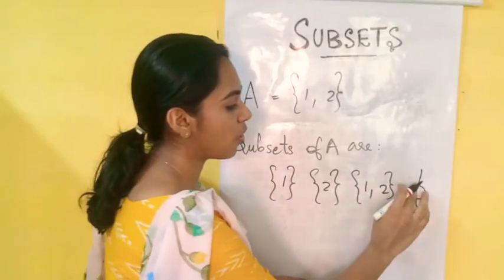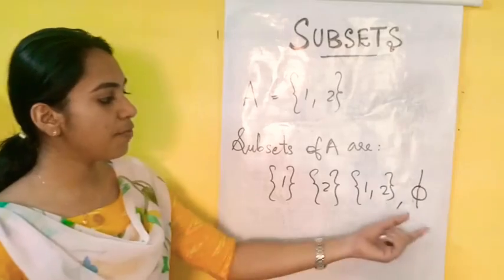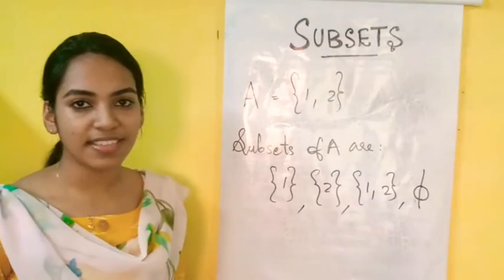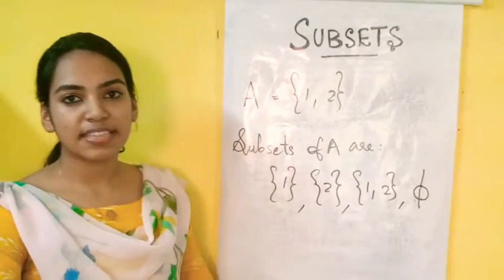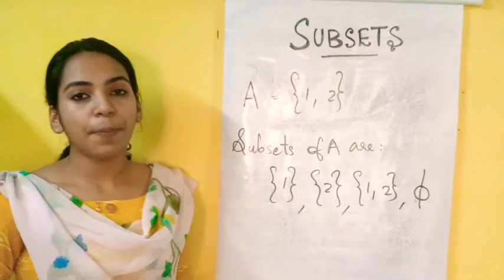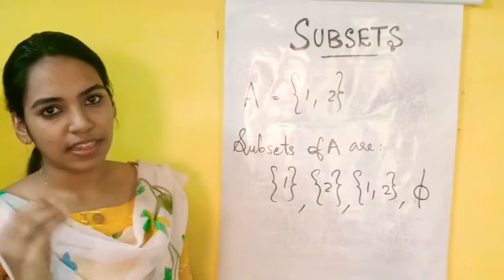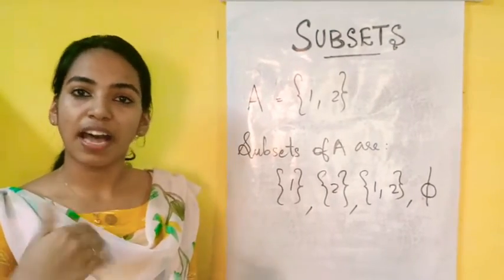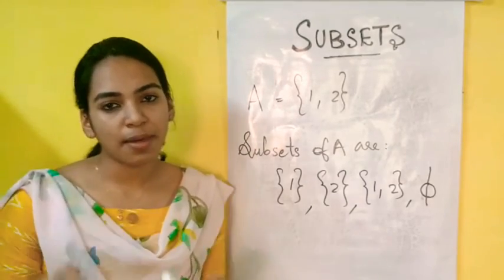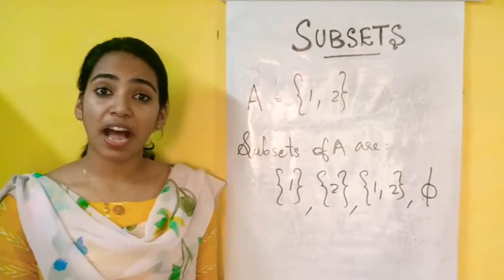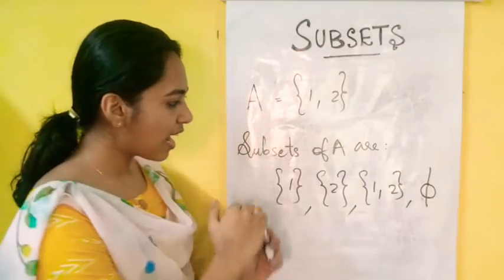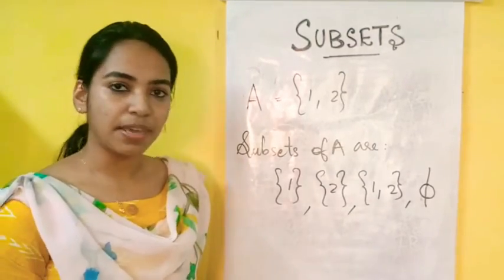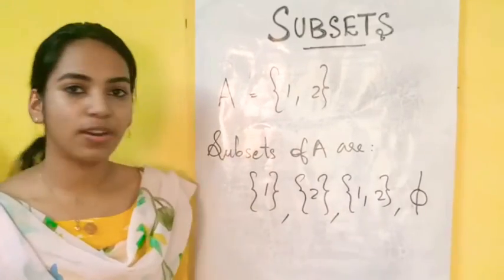The empty set is a subset of every set. The subsets are all the same in this sense. Elements will be added to the subset. We need to find how many subsets there are generally, and check all these subsets.